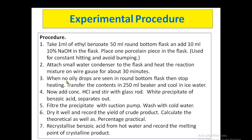After 30 minutes, when no oily droplets are seen in the round bottom flask, stop the heating and transfer all the content into a 250 ml beaker. Cool the content in ice water. Then add concentrated HCl to the solution and stir well with a glass rod — a white precipitate of benzoic acid will separate out. Filter the precipitate at the suction pump, wash with cold water, dry it well, and record the yield. Calculate both the theoretical and practical percentage yield. If you want to determine physical constants, recrystallize the benzoic acid from hot water to get pure crystals, then take the melting point of that crystalline product.